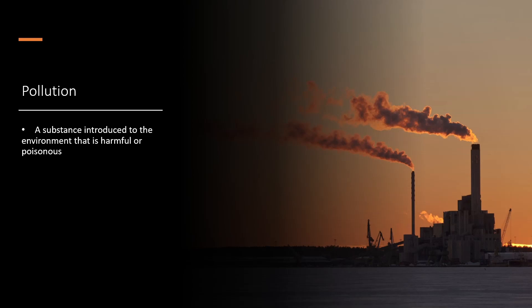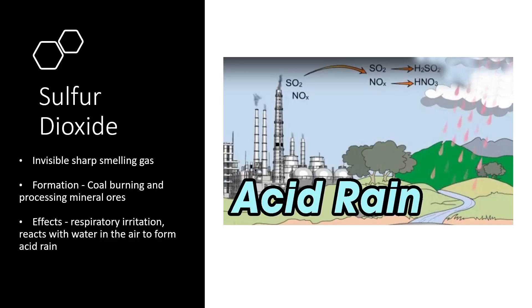Another effect of industry is pollution. A pollutant is a substance introduced into the environment that is harmful or poisonous. An example is sulfur dioxide, which is formed by burning coal and processing mineral ores. Its effects include respiratory irritation, and it reacts with water in the air to form acid rain — rain with a pH less than 7. Acid rain can cause soil to become slightly more acidic, which can prevent certain plants from growing or cause them to die, having quite a large impact on ecosystems.